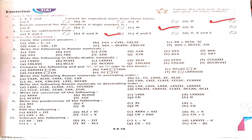Now let us start exercise 2a, Part A — select the correct answer. First question: I, X, C and blank cannot be repeated more than 3 times — the answer is M, option D is correct. Second question: Roman numerals for the smallest 4-digit number — answer is M, option C is correct. Third question: I can be subtracted from — answer is V and X, option B is correct.